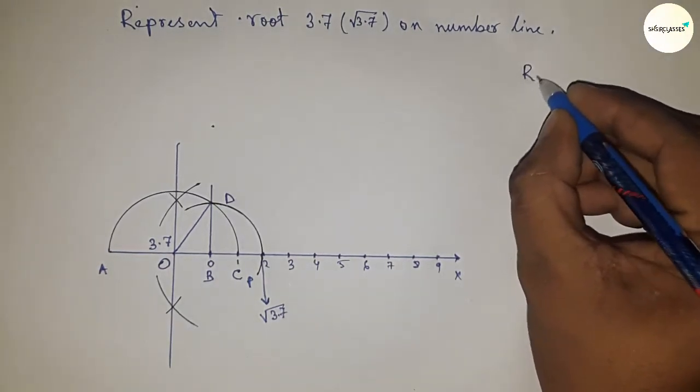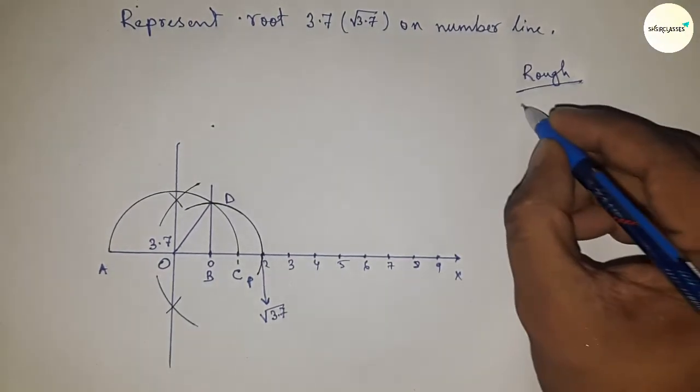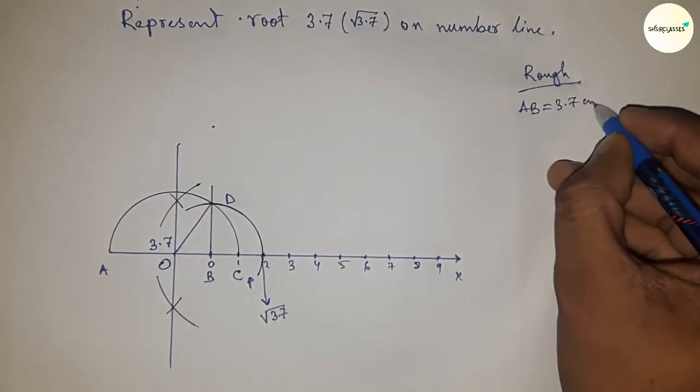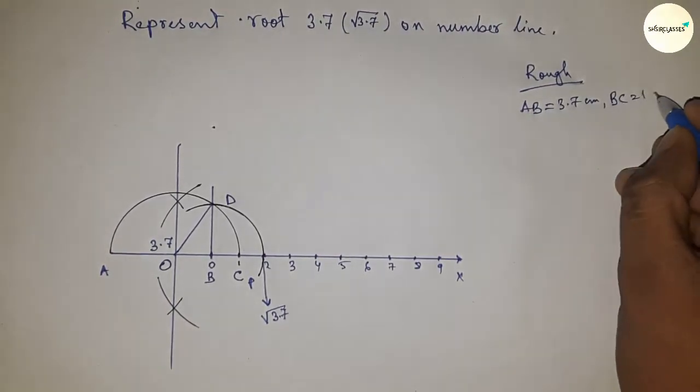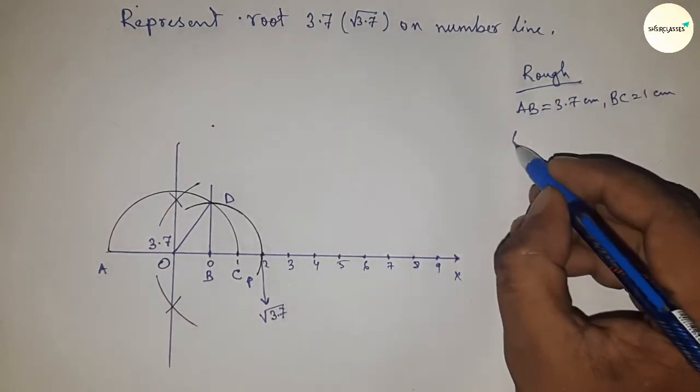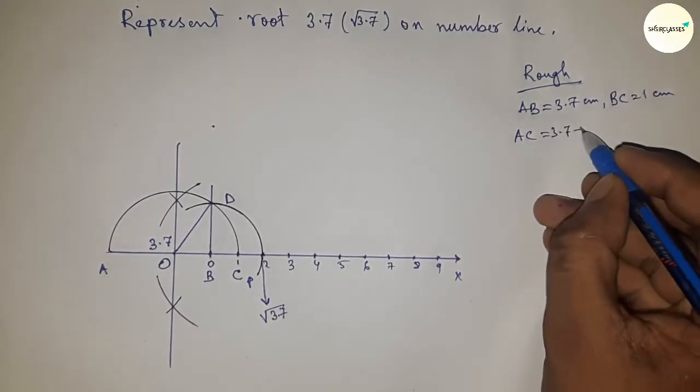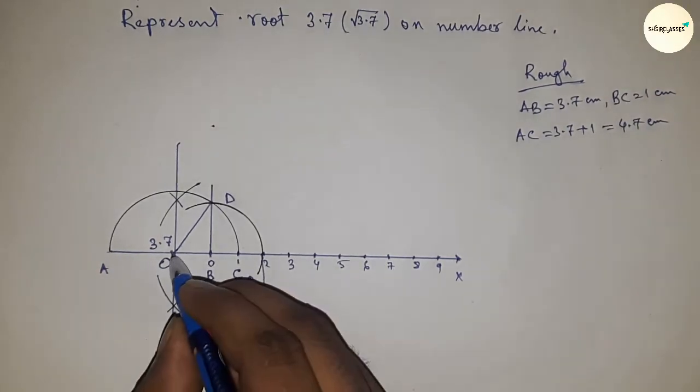Now roughly discussing the back calculation of root 3.7. So given AB equal to 3.7 centimeter and BC equal to 1 centimeter, so AC equal to 3.7 plus 1 equal to 4.7 centimeter.